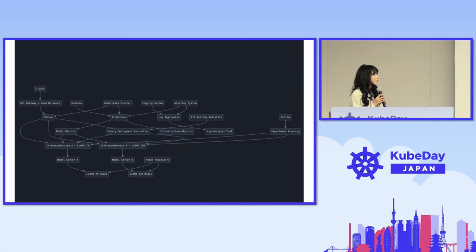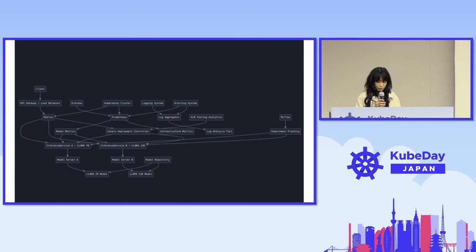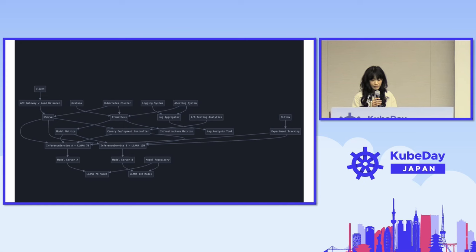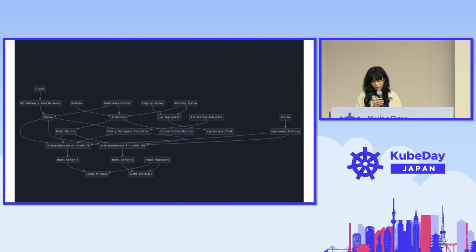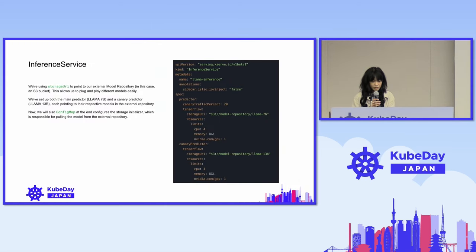So this is one of the diagrams that we can define. Imagine that we have clients, and then we have the API gateway with a load balancer, which is on top of Kubernetes. We also connect those into KServe, and we also have the canary deployment controller, which is connected to multiple models that we have. So we can adjust which ones we want to serve to users, in terms of percentage. On top of that, we are also trying to do some kind of analytics using the ML tool to see the performance, or maybe the preference of the users.